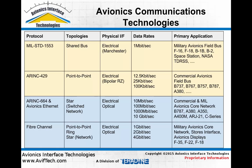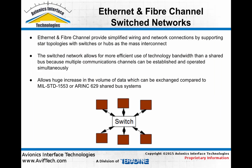For example, with ethernet, from 10 megabit all the way up to 10 gigabit per second is currently possible. And with fiber channel in common avionics applications, anywhere from one gigabit to four gigabit can be found.